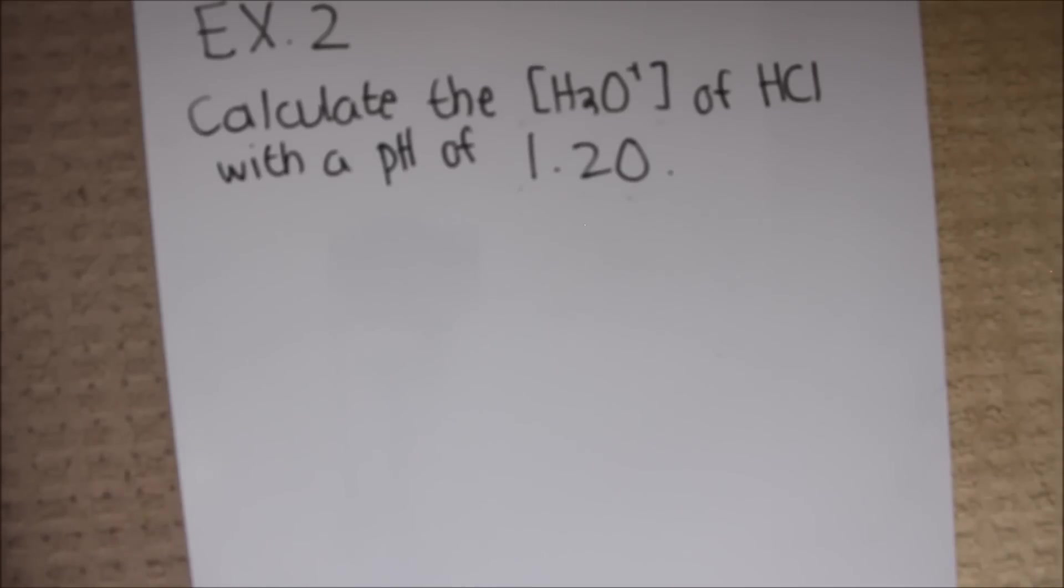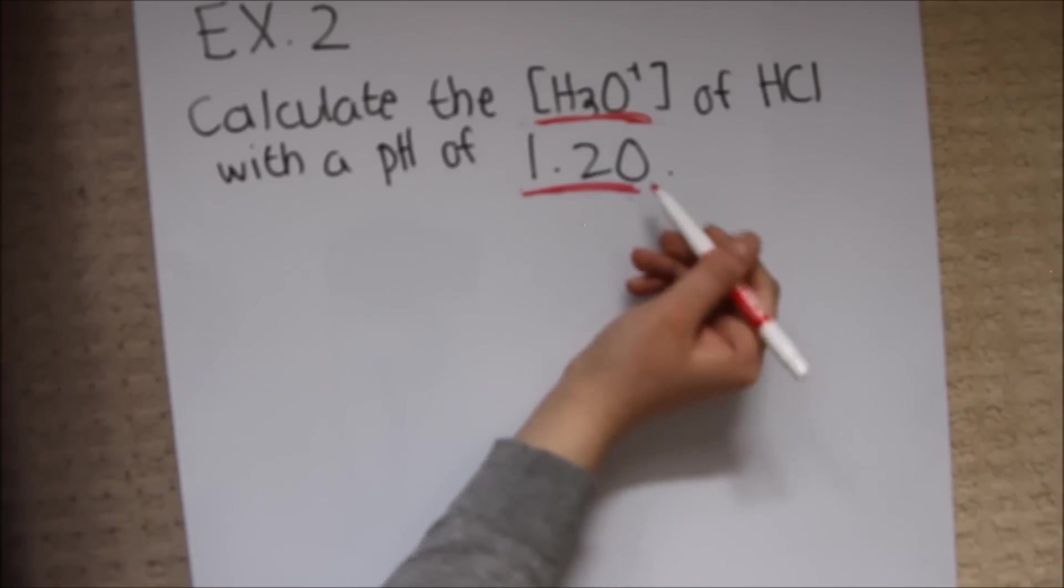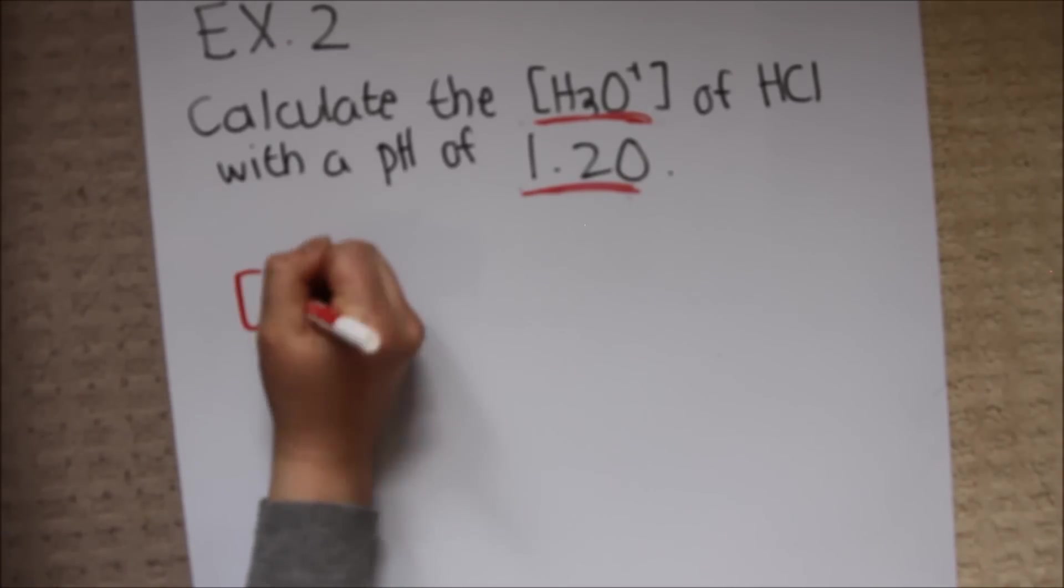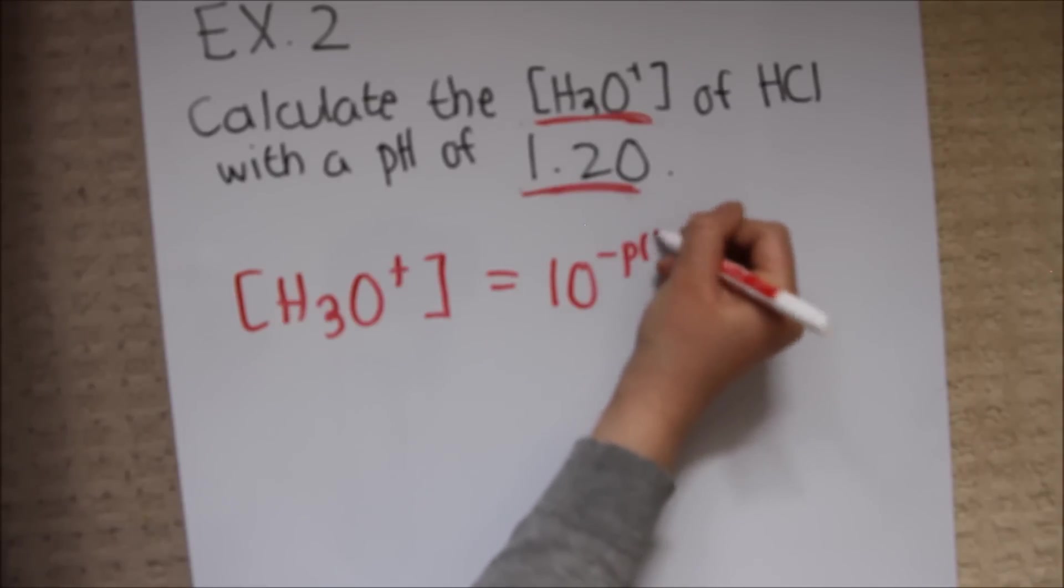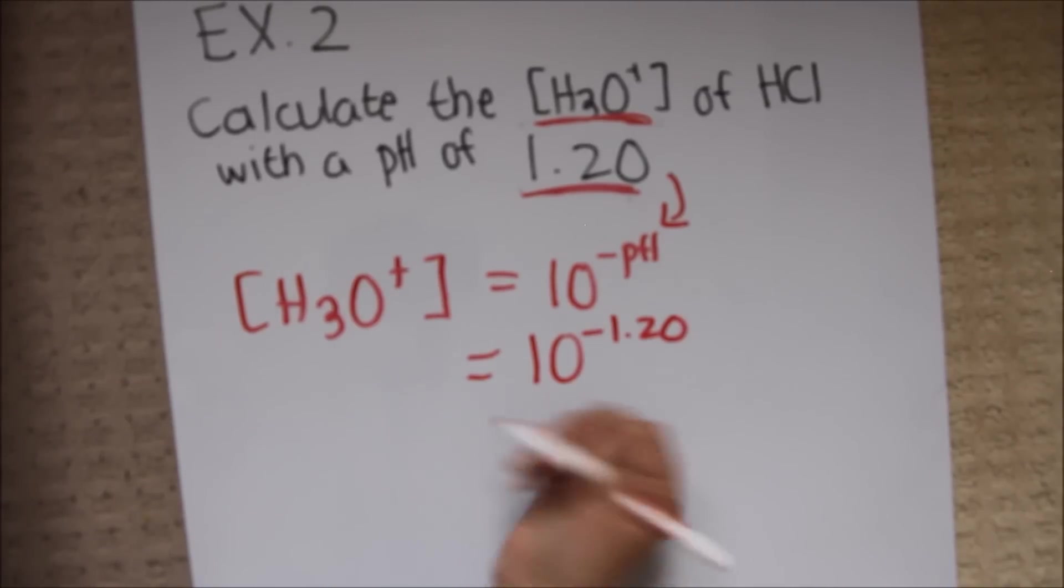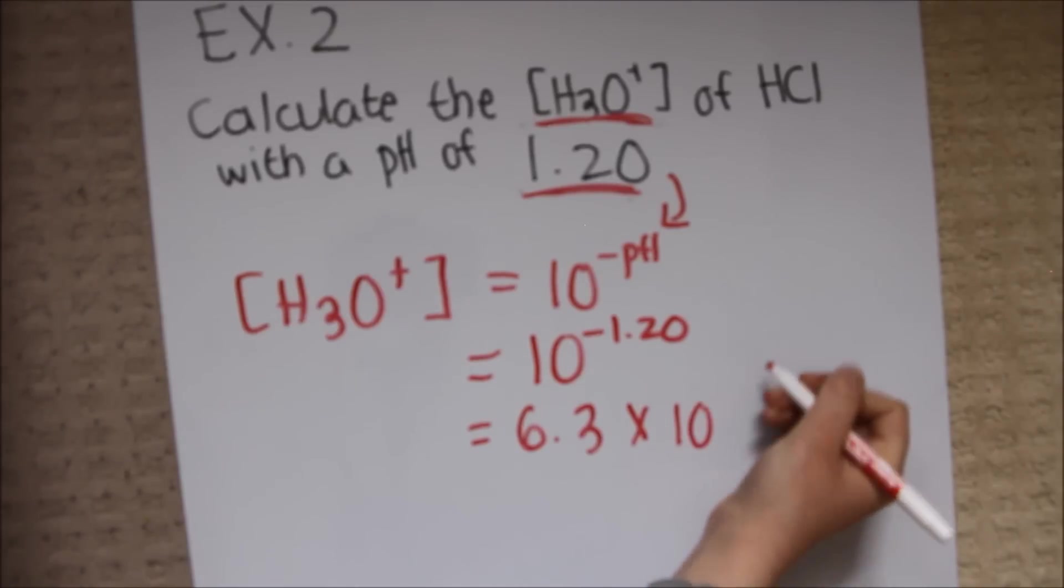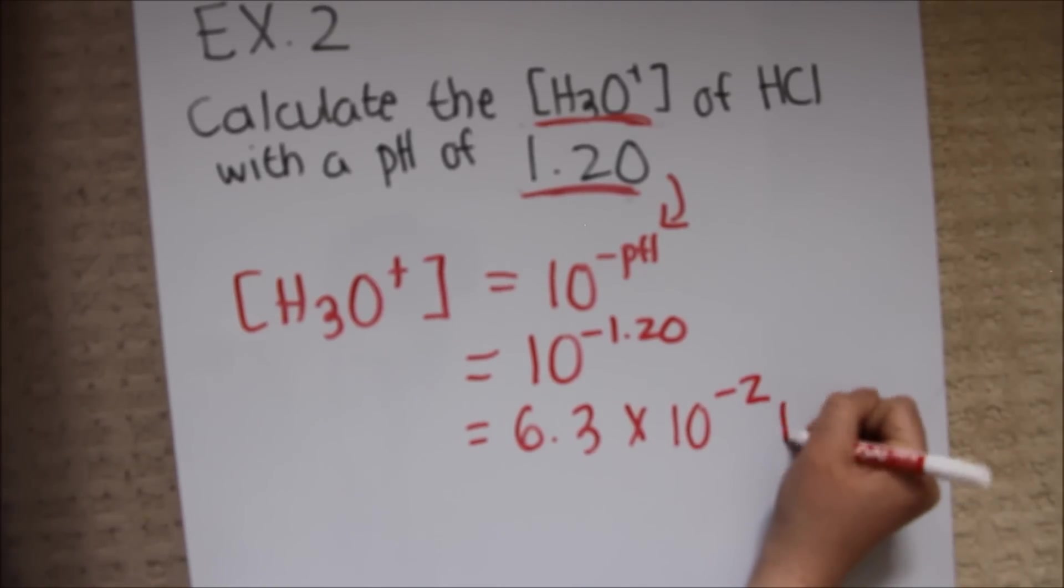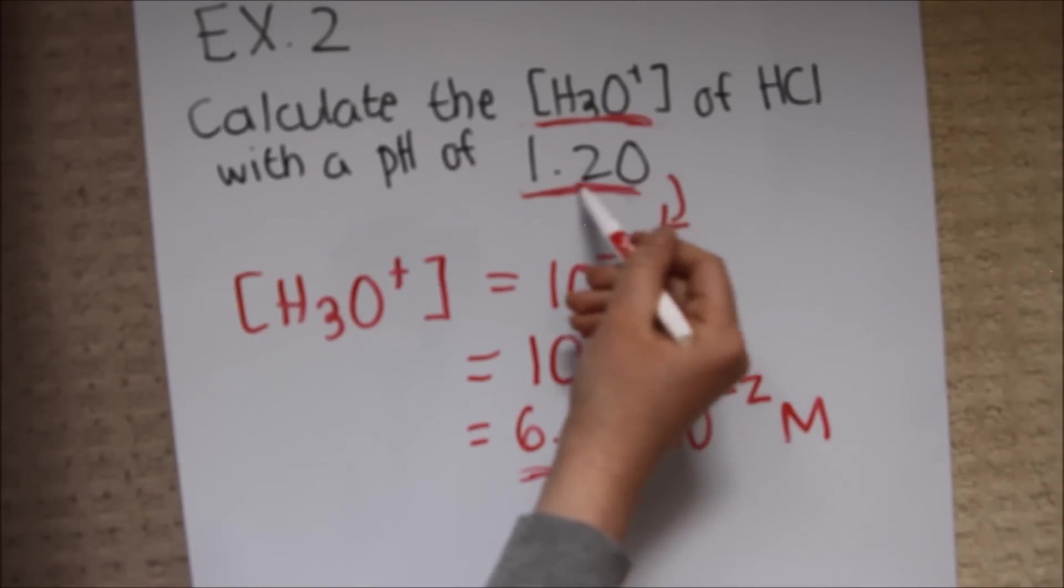Example 2. Calculate the hydronium ion concentration of hydrochloric acid with a pH of 1.20. The first thing that we need to recognize in this problem is that we are looking for the hydronium ion concentration and we have the pH. We can see that the mathematical definition for H3O+ equals 10 to the negative pH. Now it's simply a matter of substituting in the formula. When I type this into my calculator, I get an answer of 6.3 times 10 to the negative 2 moles per liter. Again, we want two significant digits because there are two significant digits in the question.